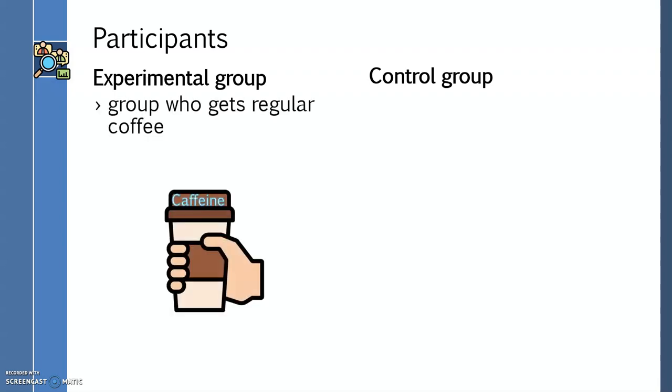This is why an experiment divides people into at least two groups, an experimental group and a control group. The experimental group gets the experimental manipulation, that is, the treatment or variable being tested, and the control group does not. In our example, the experimental group would get caffeine before the exam, and the control group would not.